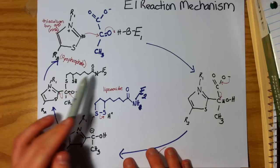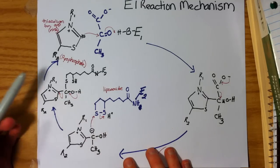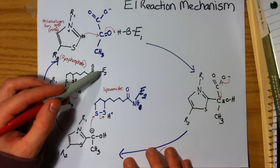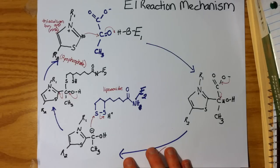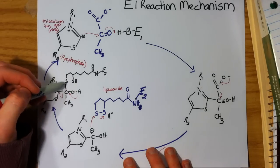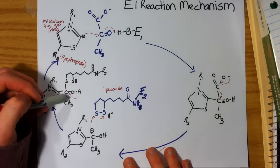And what we have now is our E2 with its lipoamide, or lipoic acid, bound through our sulfur group to this acetyl group.